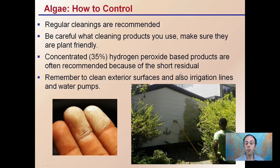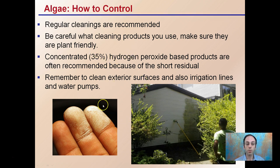How to control it: regular cleanings are recommended, especially if you see or know areas where it tends to grow. Be careful what cleaning products you're using and make sure they're plant-friendly. Concentrated, around 35%, hydrogen peroxide-based products are often recommended because they have a short residual — they will kill the algae but won't last very long, which reduces the likelihood of damaging the plants. If you do get 35% hydrogen peroxide on you, it will turn your fingers white. Remember to clean exterior surfaces, irrigation lines, water pumps, and also check those filters as well.